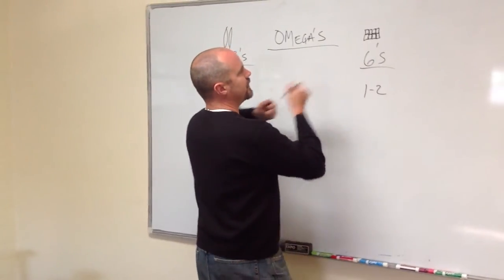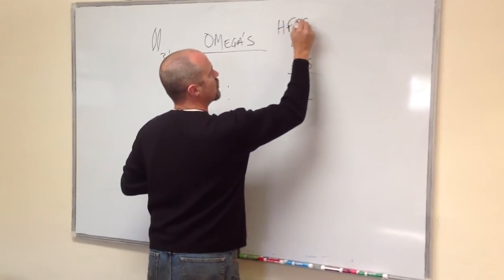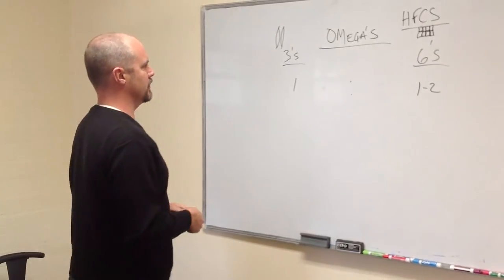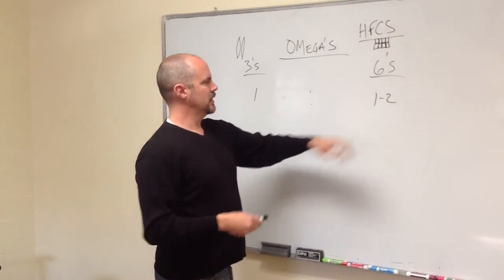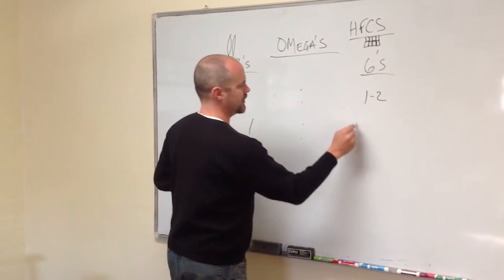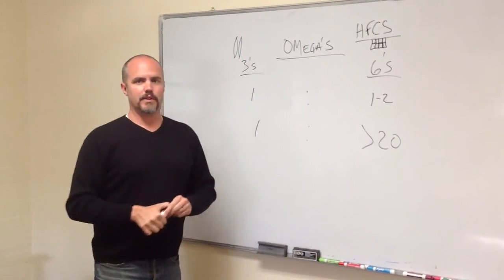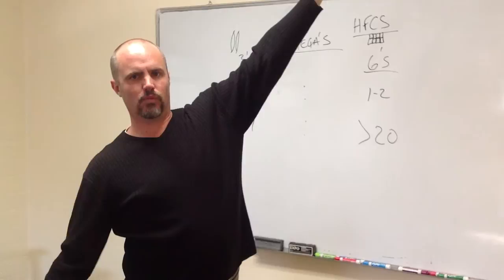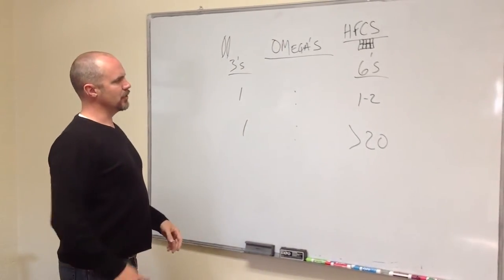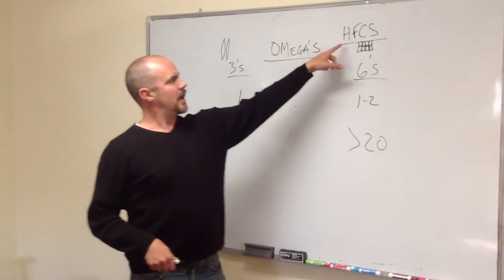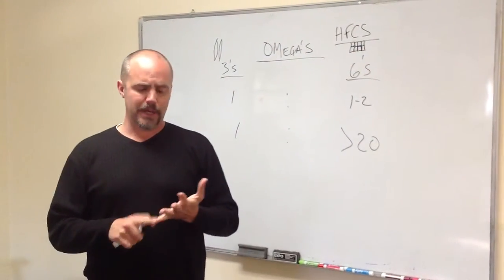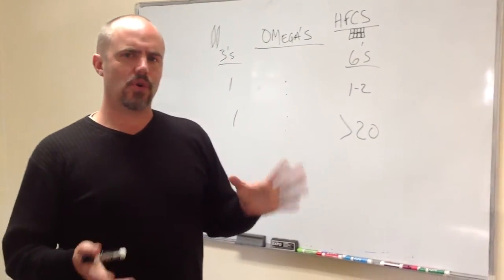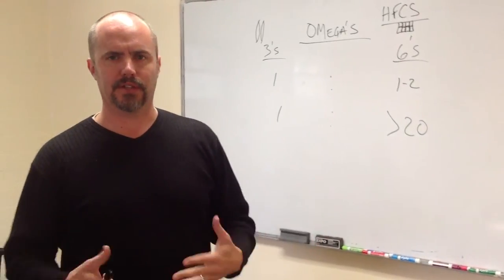So corn, high fructose corn syrup by the way is in everything, right? So the meat that we're eating is filled with corn, so it throws the ratio off. So instead of the ratio being 1 to 1, the ratio has become 1 to over 20. The ratio, instead of it being this nice even between 3s and 6s, now 6s are so high and 3s are so low. The ratio is thrown off because high fructose corn syrup is in everything in a bag, a box, or a can. We see it everywhere. So we're eating all this corn syrup and it's making everybody big and fat, and that's not good.